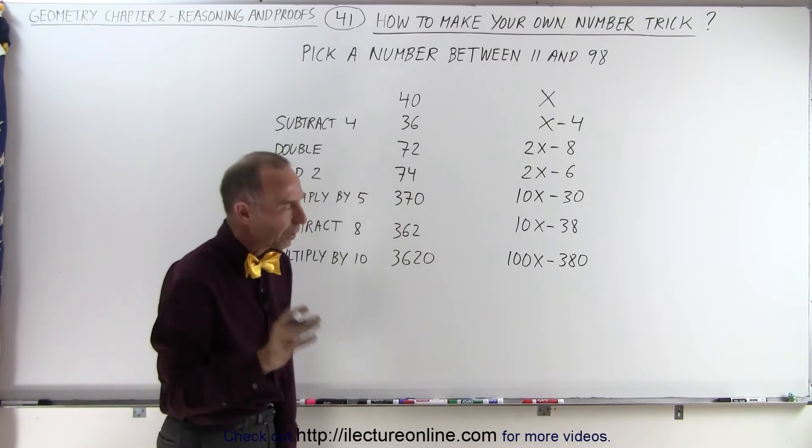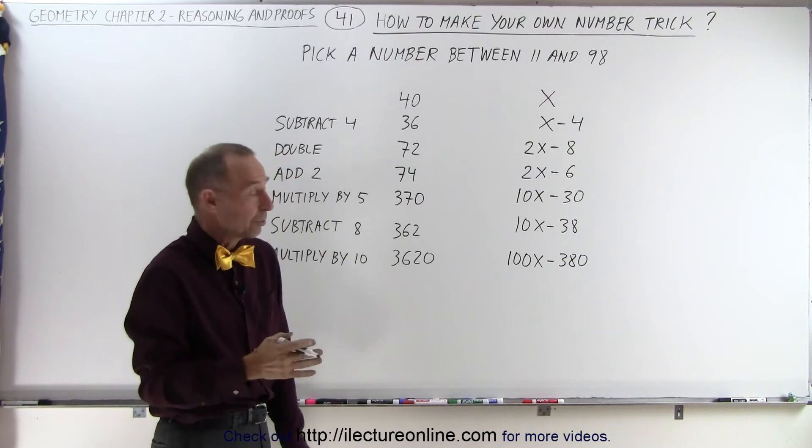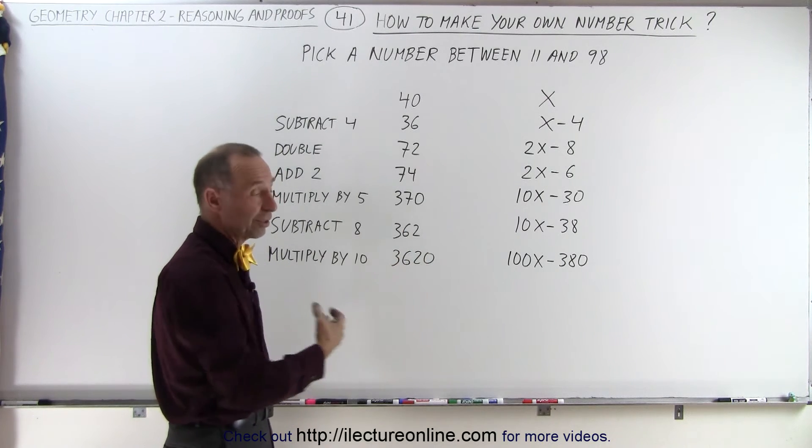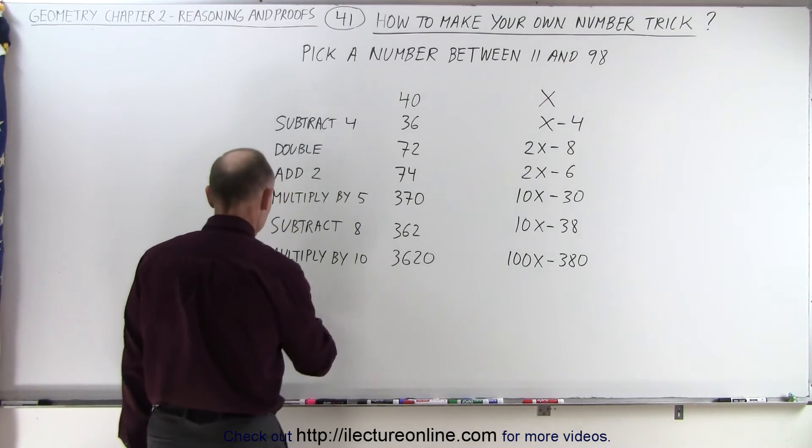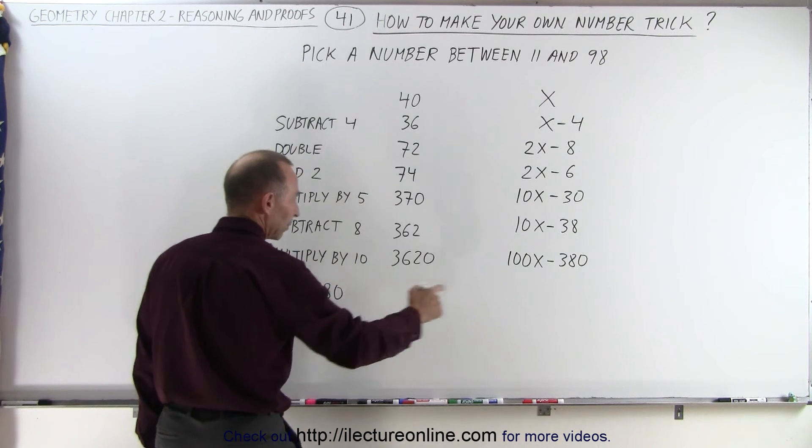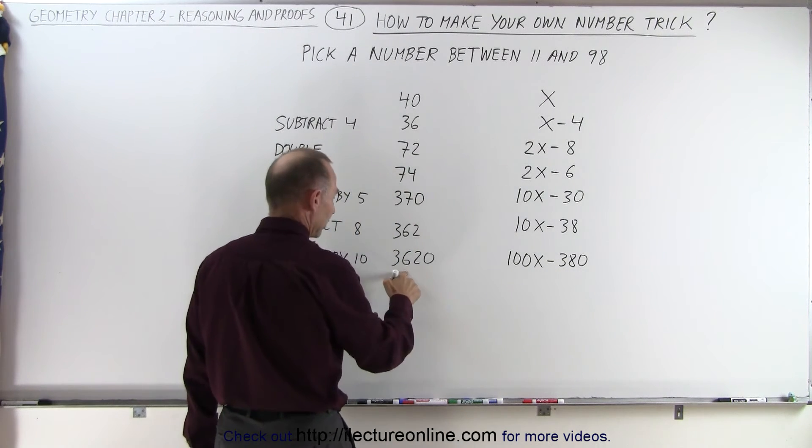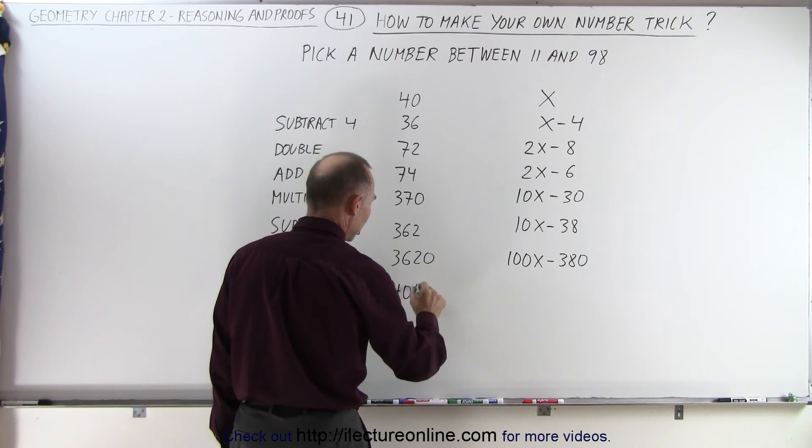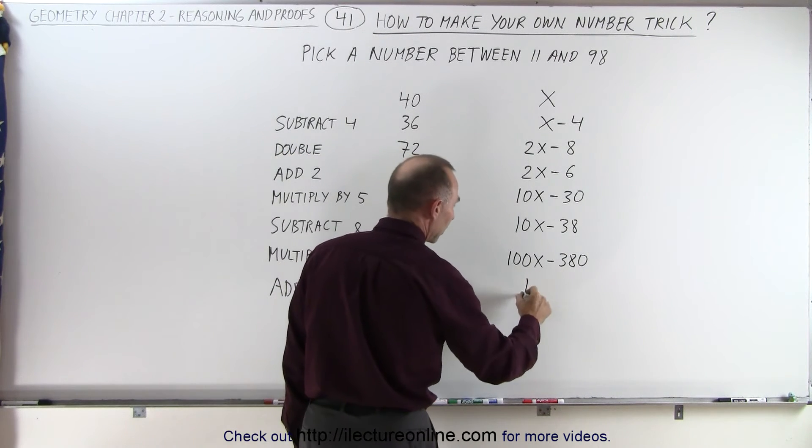And now you have to get rid of the 380. To do that, you have to add 380. So you tell them add 380. That's based upon getting rid of this. So add 380 to this, you get 4,000. Add 380 to this, you get 100x.